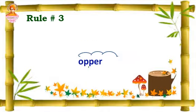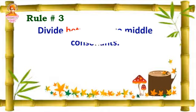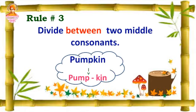Rule number three: divide between two middle consonants. Example: pumpkin — P-U-M-P-K-I-N. We are splitting in between the two middle consonants as pump-kin.